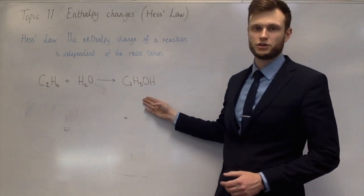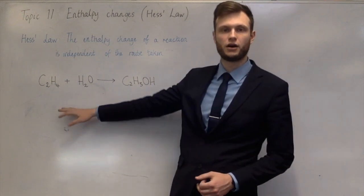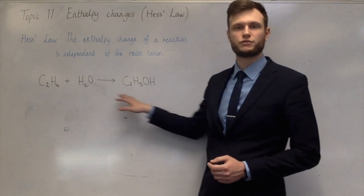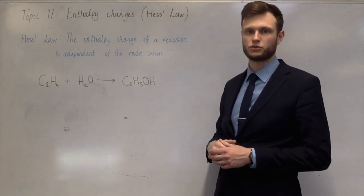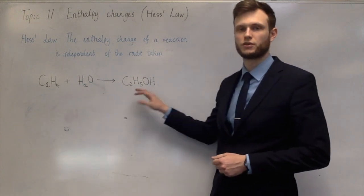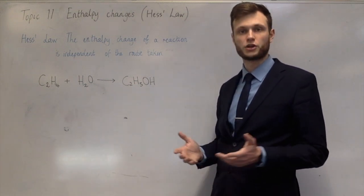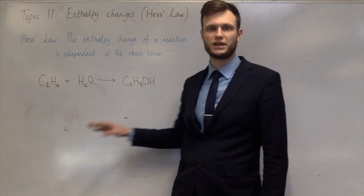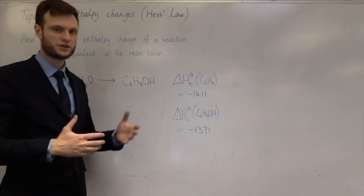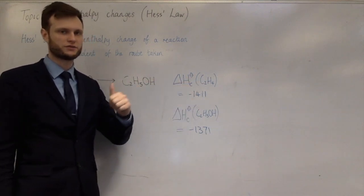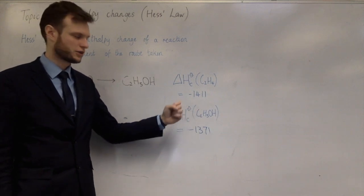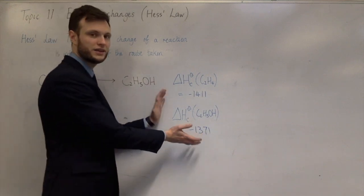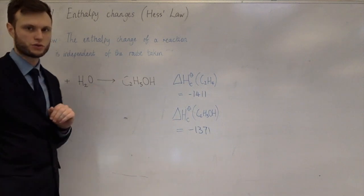So let's assume this is the enthalpy change we're trying to work out — the hydration of ethene to make ethanol. There are a few bits of data we could be given. We could be given the enthalpy change of formation of each of the three chemicals, or we could be given the enthalpy change of combustion of the two organic chemicals. I'm going to do the combustion one. The data needed are the combustion of ethene, which is minus 1411 kJ/mol, and the combustion of ethanol, which is minus 1371 kJ/mol. What we need to do is combine these data with the equation to work out the unknown enthalpy change of the hydration reaction.